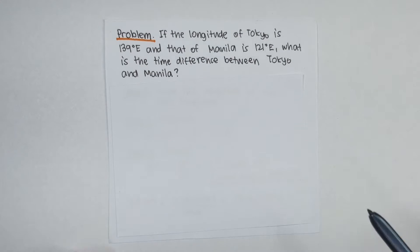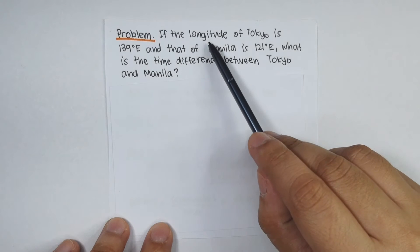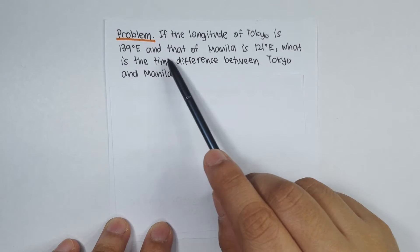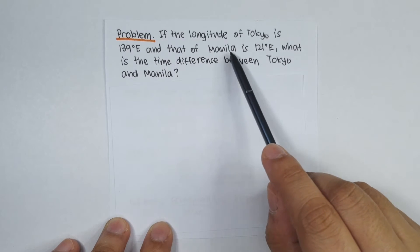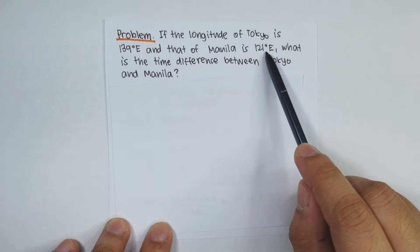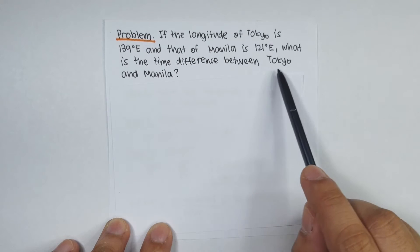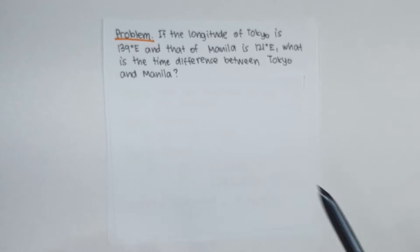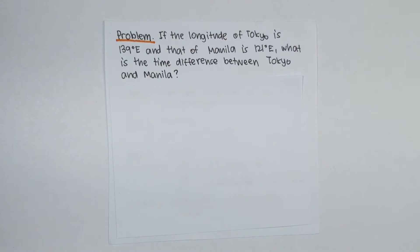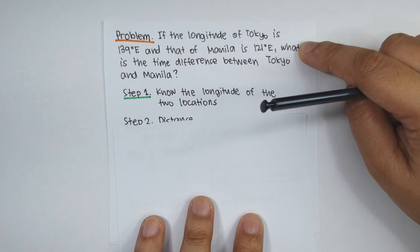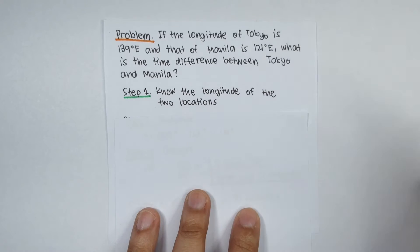Problem number one: if the longitude of Tokyo is 139 degrees east and that of Manila is 121 degrees east, what is the time difference between Tokyo and Manila? So how do we determine the time difference? Step number one is that you have to know the longitudes of the two locations.